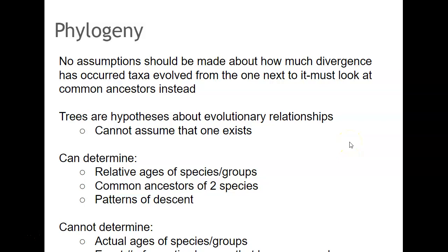No assumptions about how much divergence has occurred. Trees are hypotheses, we don't necessarily know 100% that all these are accurate. It helps us determine relative ages of species, common ancestors, and patterns of descent. But it does not tell us the actual age of a species, only relative, and cannot tell us the exact number of genetic changes.